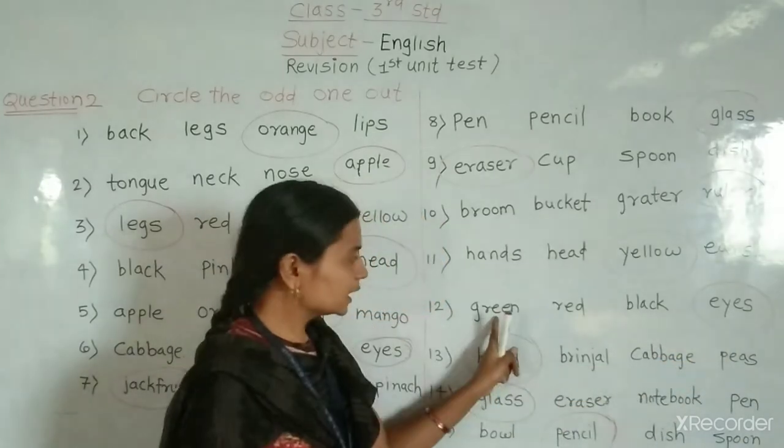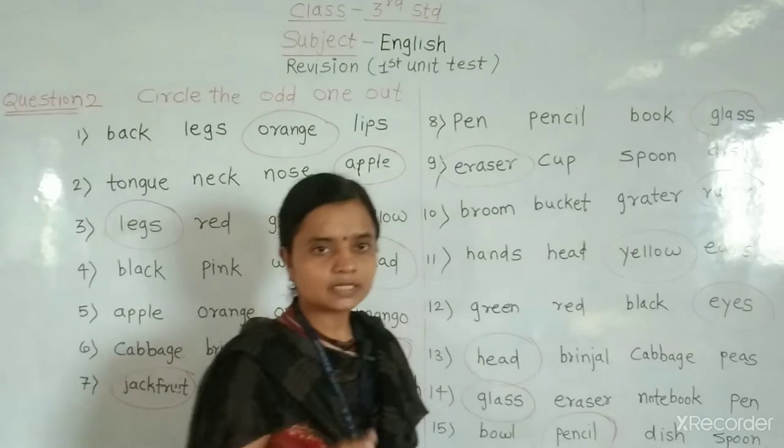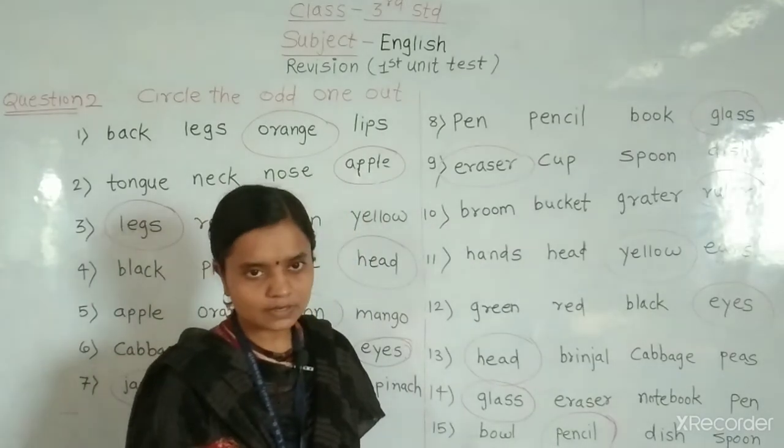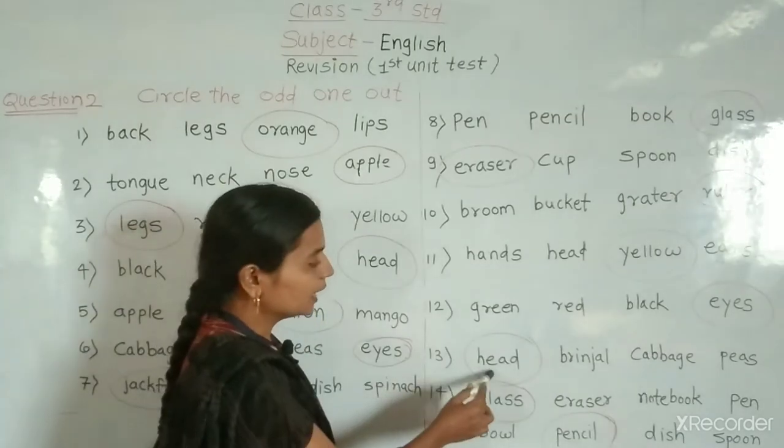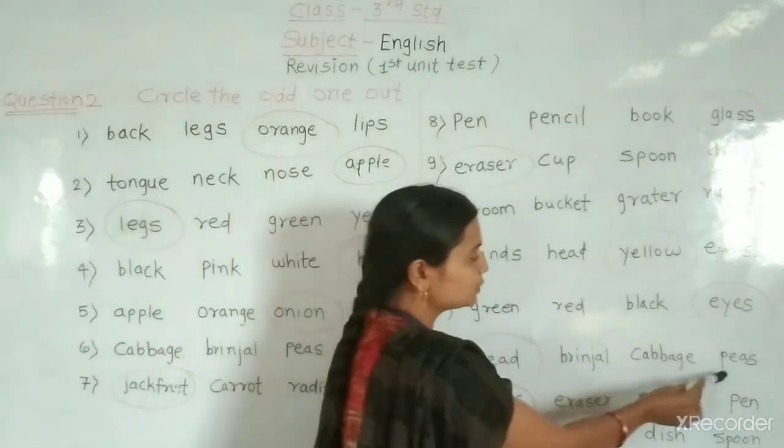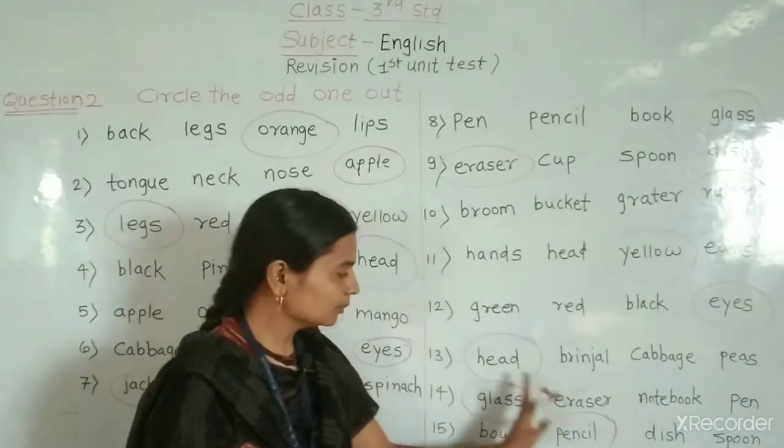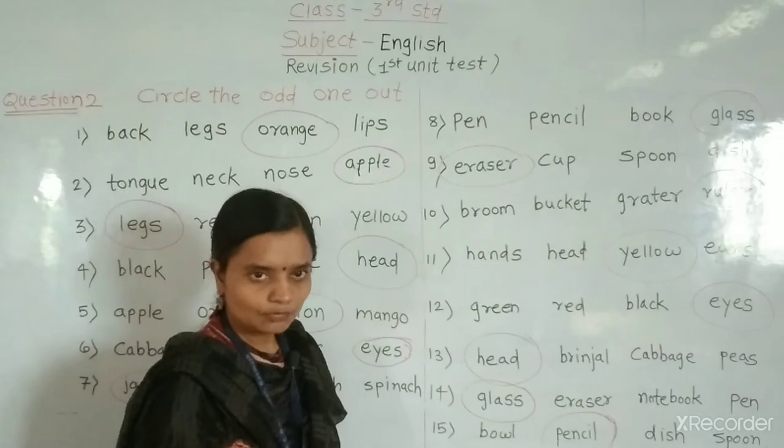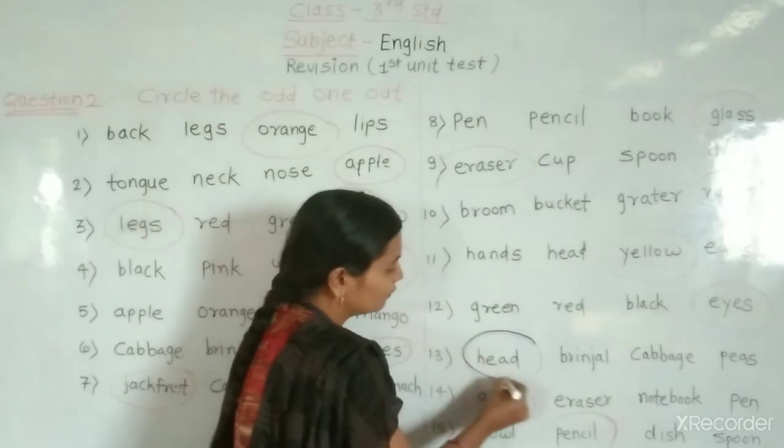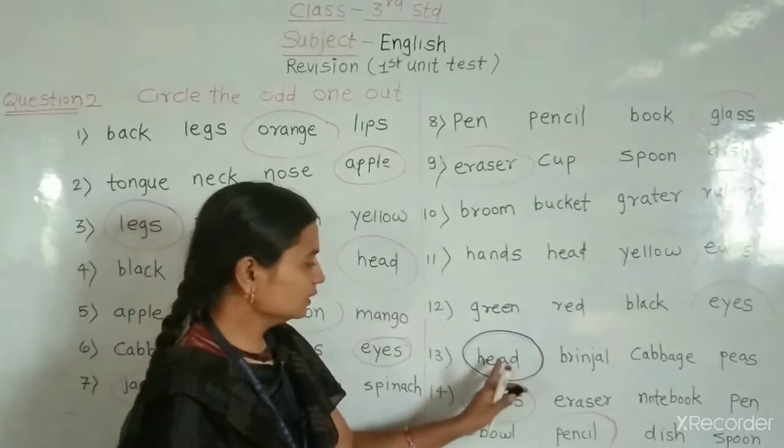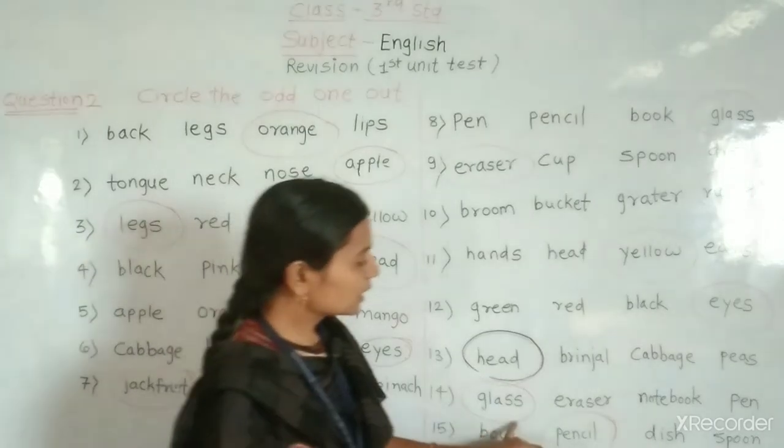Baga green, red, black. Green, red, black. These are the names of visitable. But head is the part of our body. So we will circle it.